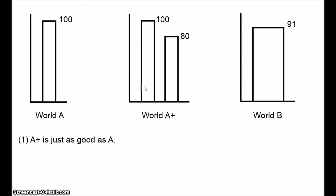Finally, world B. B is composed of 2 million people, and they all live very good lives, lives of value 91. Now, B is surely better than A+, since the worse-off group gains more than the better-off group loses. The worse-off group gains 11, the better-off lose 9. So that must be better. So we have the following. A+ is just as good as A. B is better than A+. And this leads to the conclusion B is better than A.